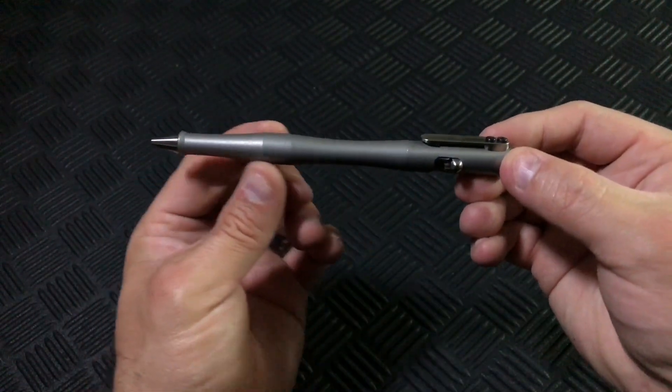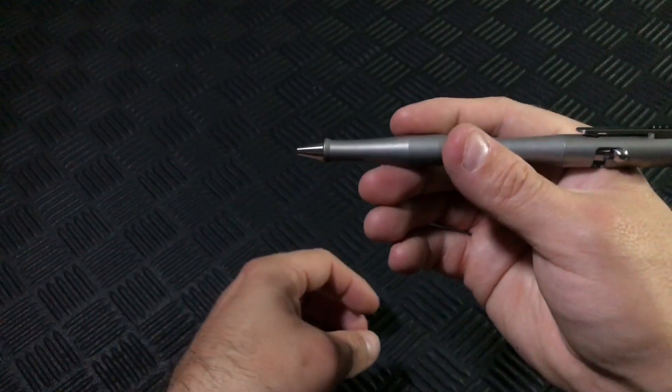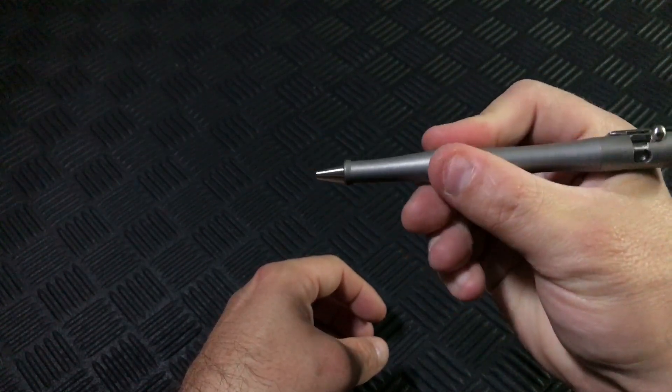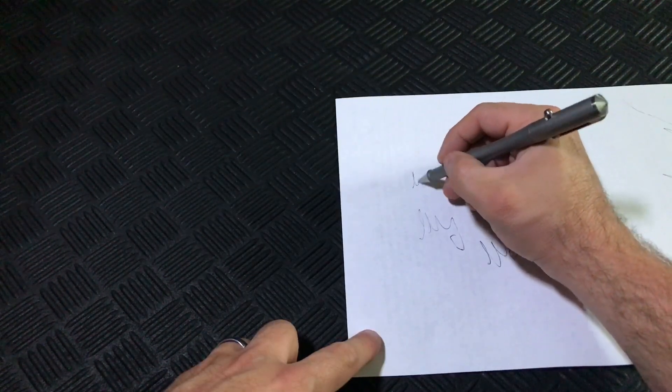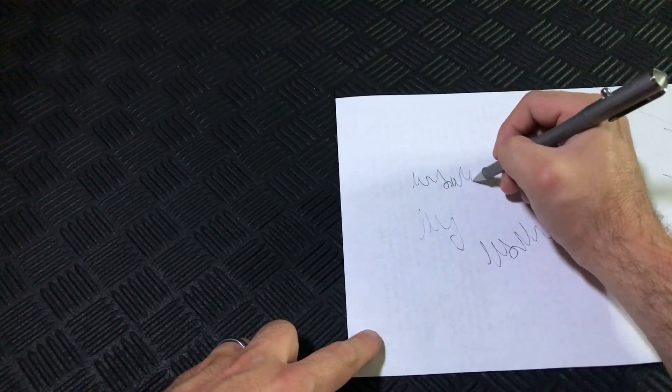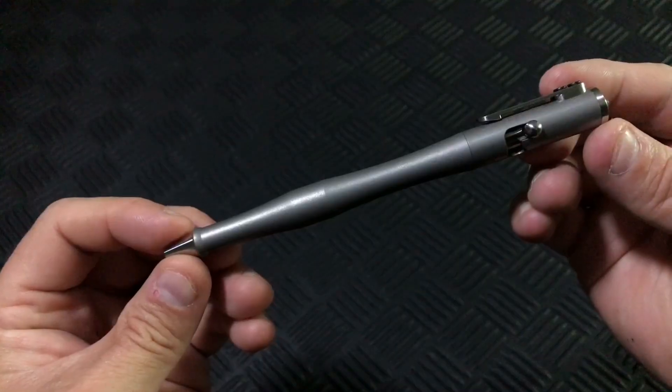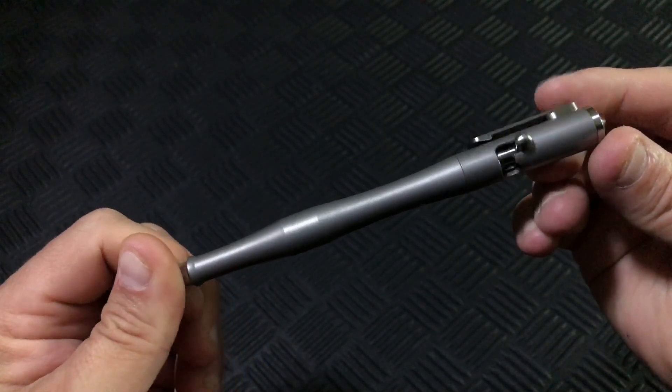The design has this widened area where you would grip it for writing, and it feels very comfortable. And that quality Fisher cartridge ensures a consistent experience when writing, even on this uneven surface. So yeah, the pen can write, but what else is it good for?